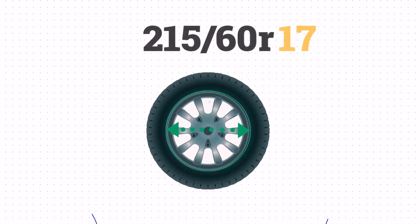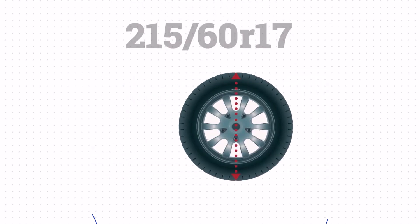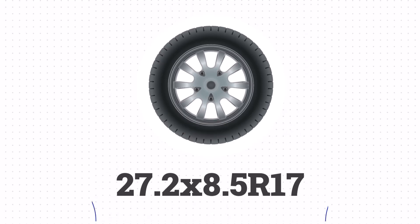Lastly, the final number, 17, is the wheel size. Now that we've got the width, sidewall size, and wheel size, we can take all that together to determine the height of the tire. We'll take the sidewall size, 5.1 inches, add the wheel size, 17 inches, and then add the sidewall size one more time. This gives us a height of 27.2 inches. The size 215/60R17 is equivalent to 27.2 x 8.5 R17 in inches.